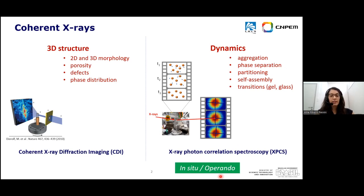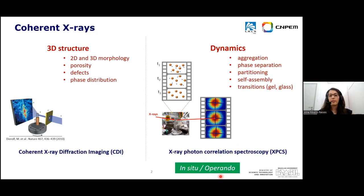In an in-situ study, we follow a material under real conditions, for example during the synthesis of a catalyst. In an operando study, we follow a material under working conditions — for example, a catalyst during a reaction — using the same characterization techniques while simultaneously following the result of the reaction with another technique. This presentation will be mostly dedicated to dynamics, but before I go into dynamics, I would like to show you an example of an operando study of a catalyst using coherent X-ray diffraction imaging.